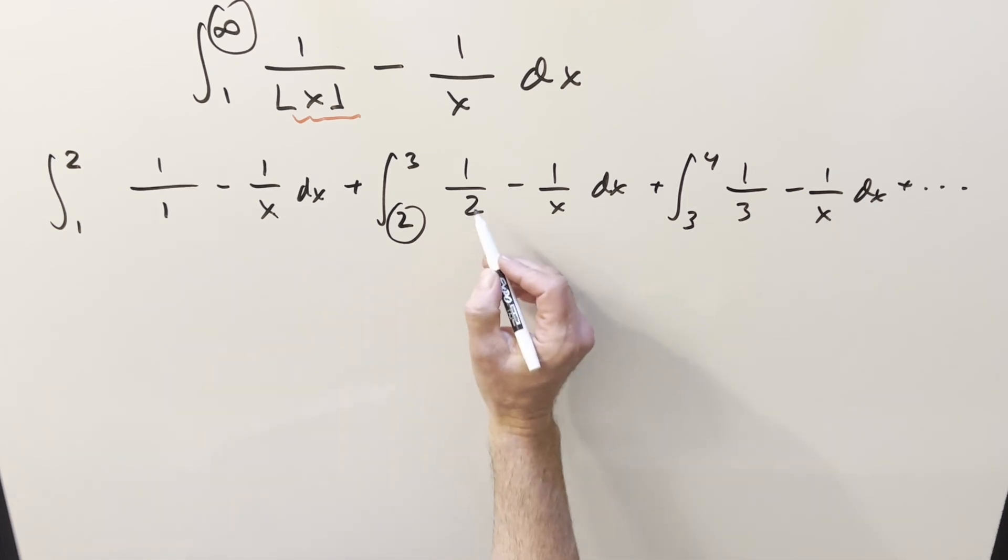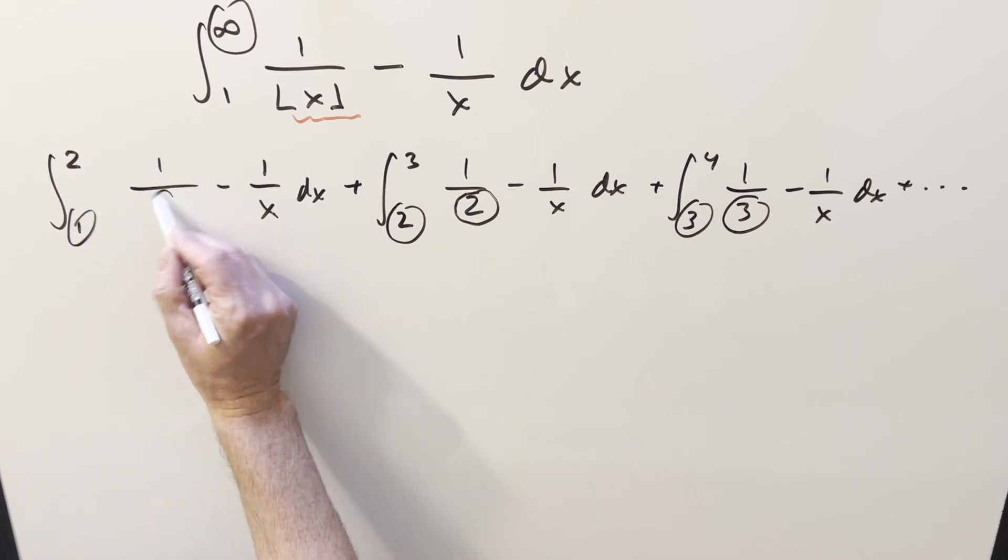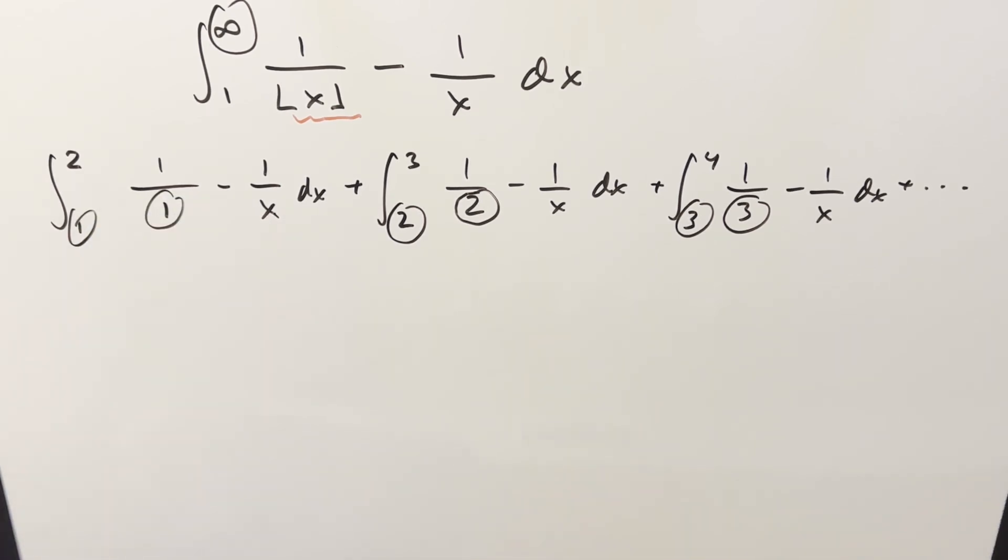So now just notice that in every case, this value here is going to match our lower bound, 3, 3, 1, 1. And so it's hard to, and so it's kind of hard to deal with an infinite number of integrals. So let's just try to generalize any one of these integrals. So what we have is it's going to be something going from n to n plus 1, where n is going to be an integer, so that we're only differing by 1 here. And then in every case, like we have here, here, and here, this is just going to be 1 over n minus 1 over x dx. And the way to have this represent our whole integral, let's just write this as a sum, where n is going to be going from 1 all the way to infinity.